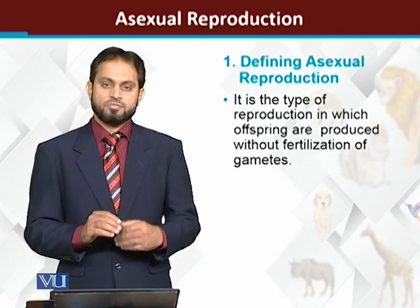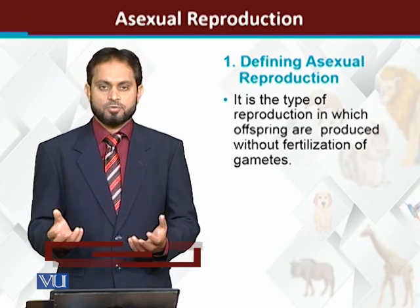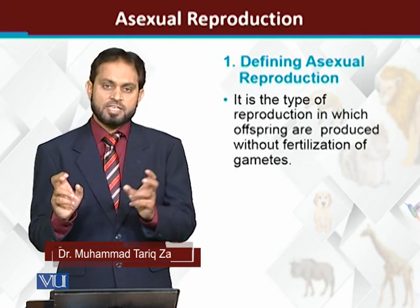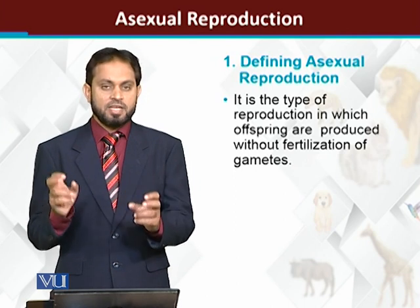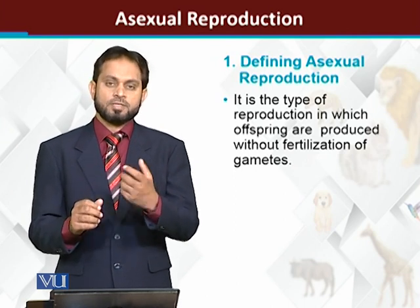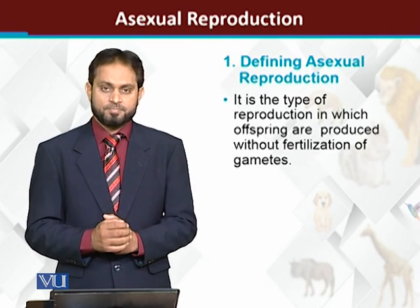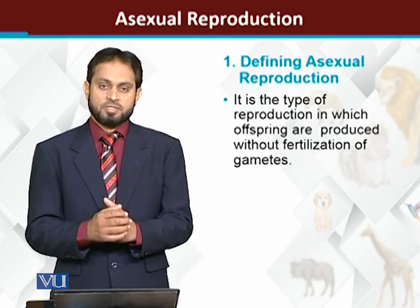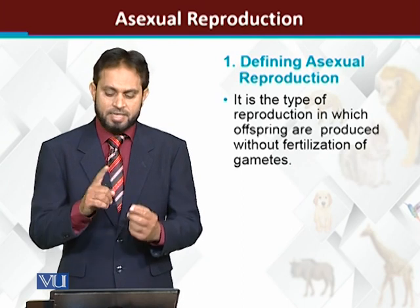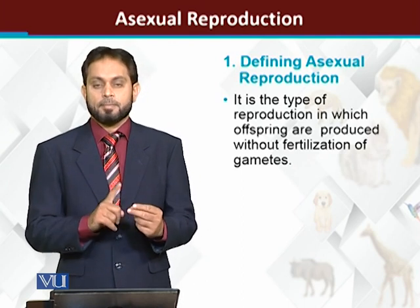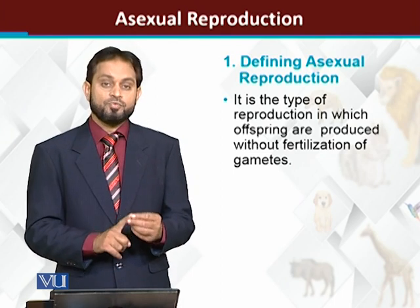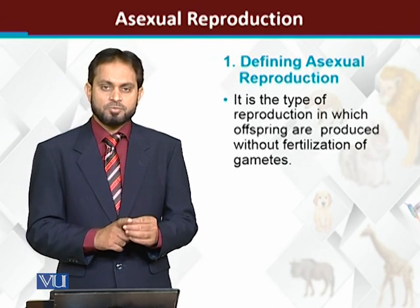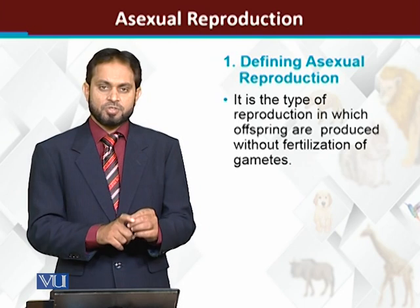The prefix 'a' means without, and 'sexual' means sex — involving male and female. So asexual reproduction is the method of reproduction in which there is no fusion of gametes. We can also define it as: asexual reproduction is the method of reproduction in which only one sex is involved.